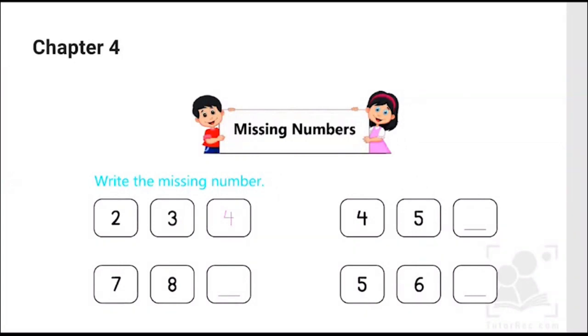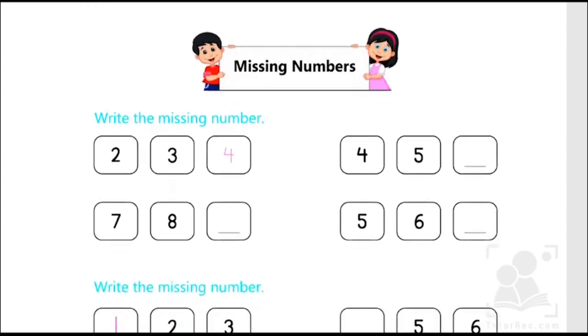Hi kids! Today's video is from mathematics chapter number 4, which is about missing numbers. Up till now we have learned counting from 1 to 9, counting objects and matching with the correct number. So this next chapter 4 is about finding out what comes next. That is called missing numbers. So let's start with today's exercise.